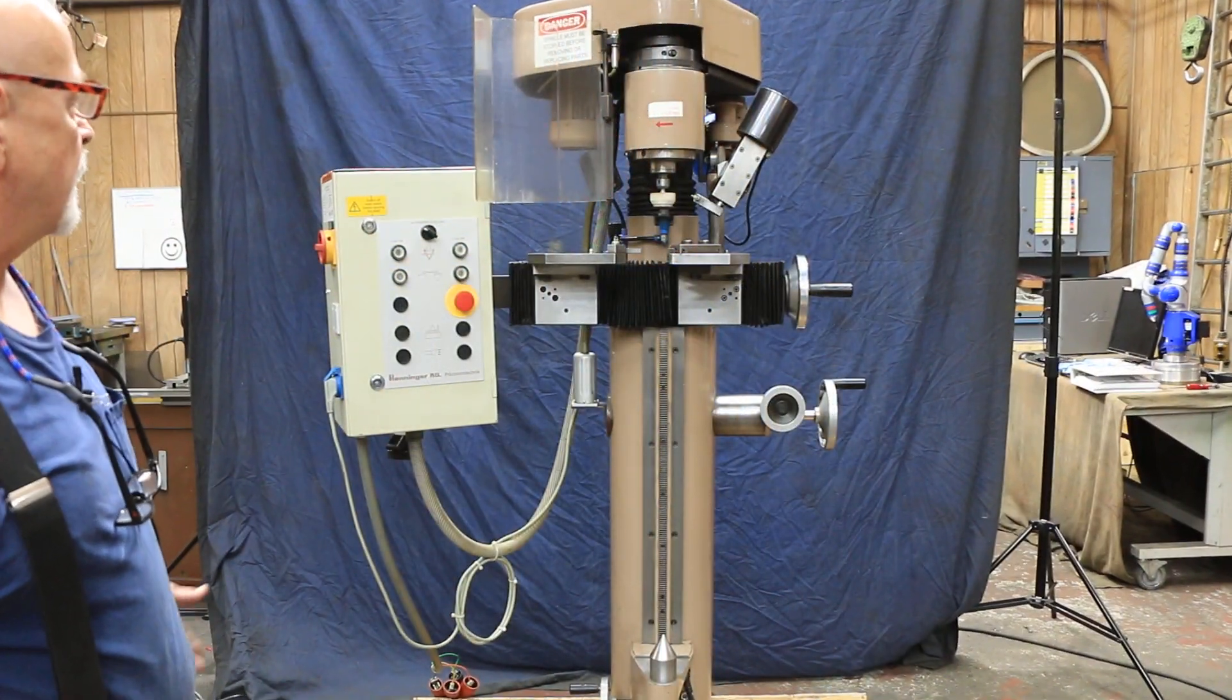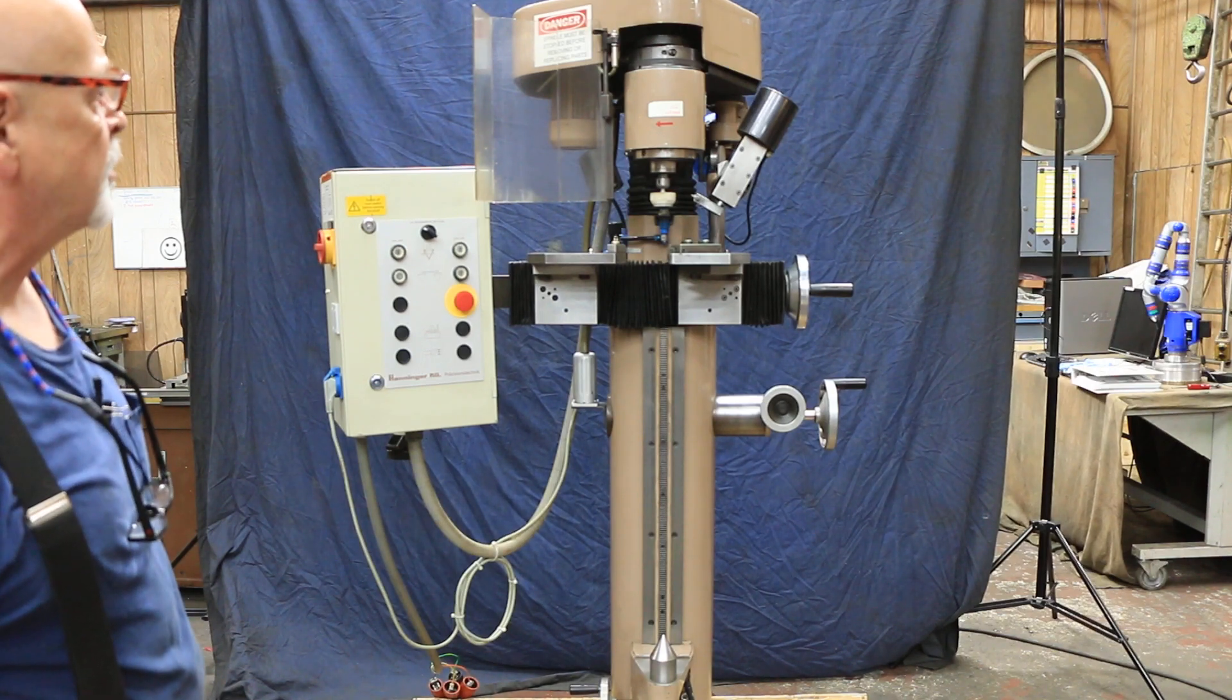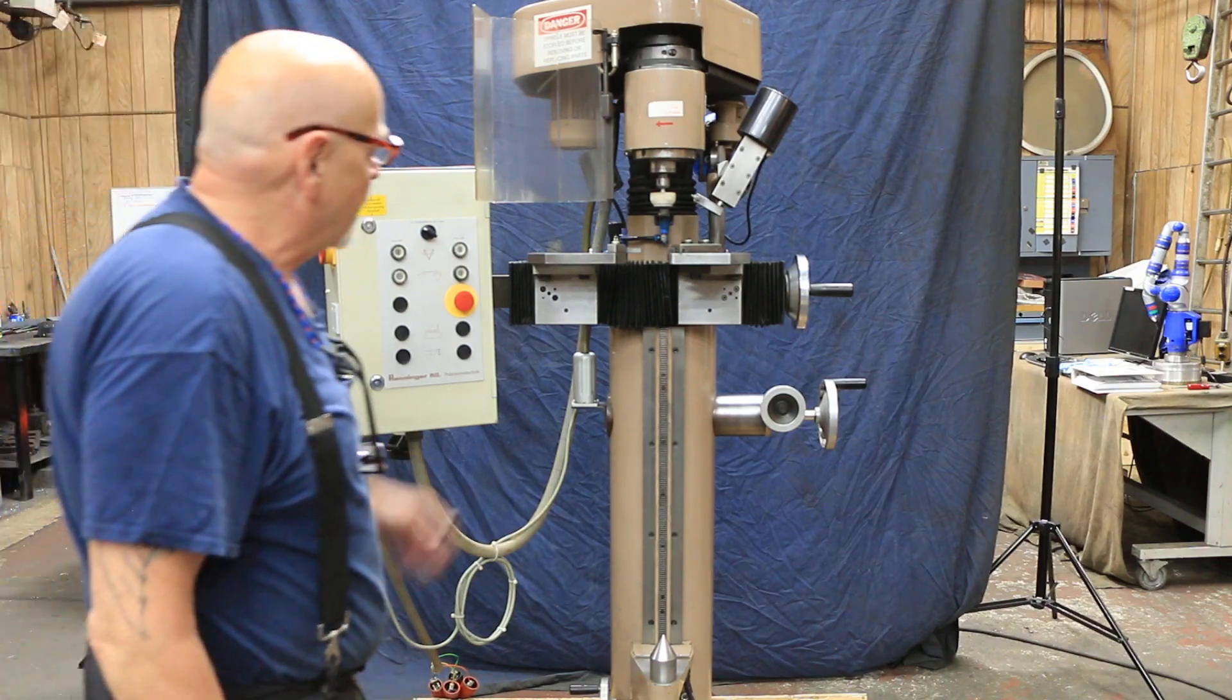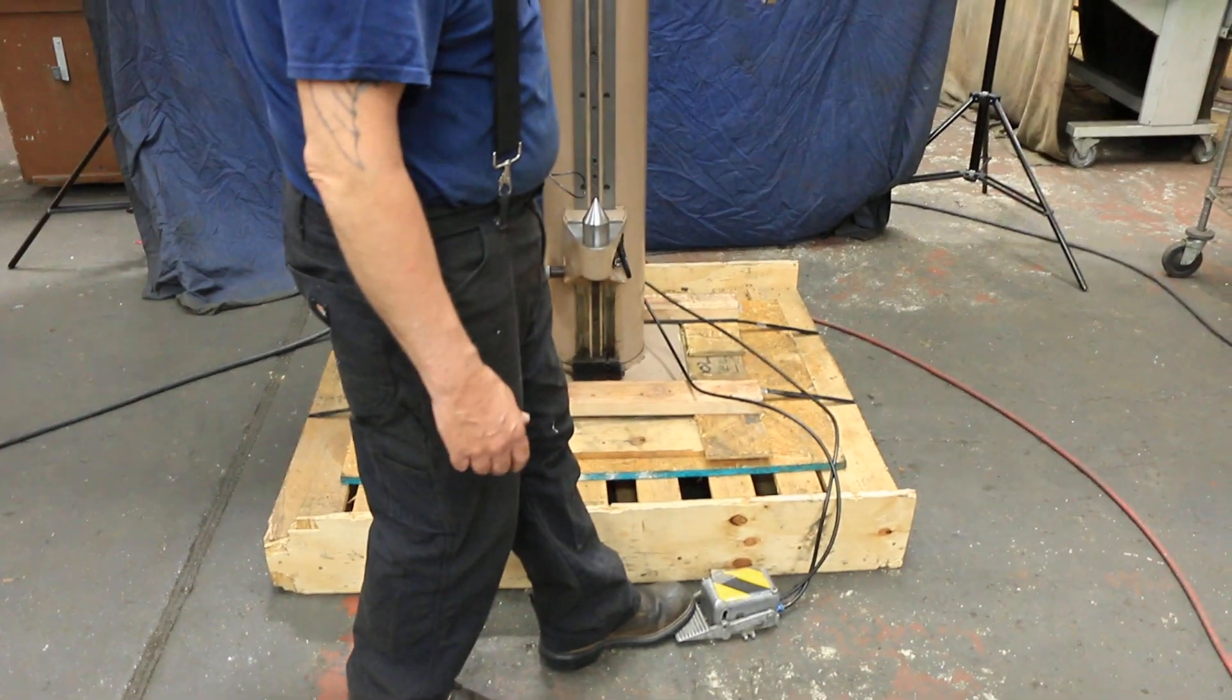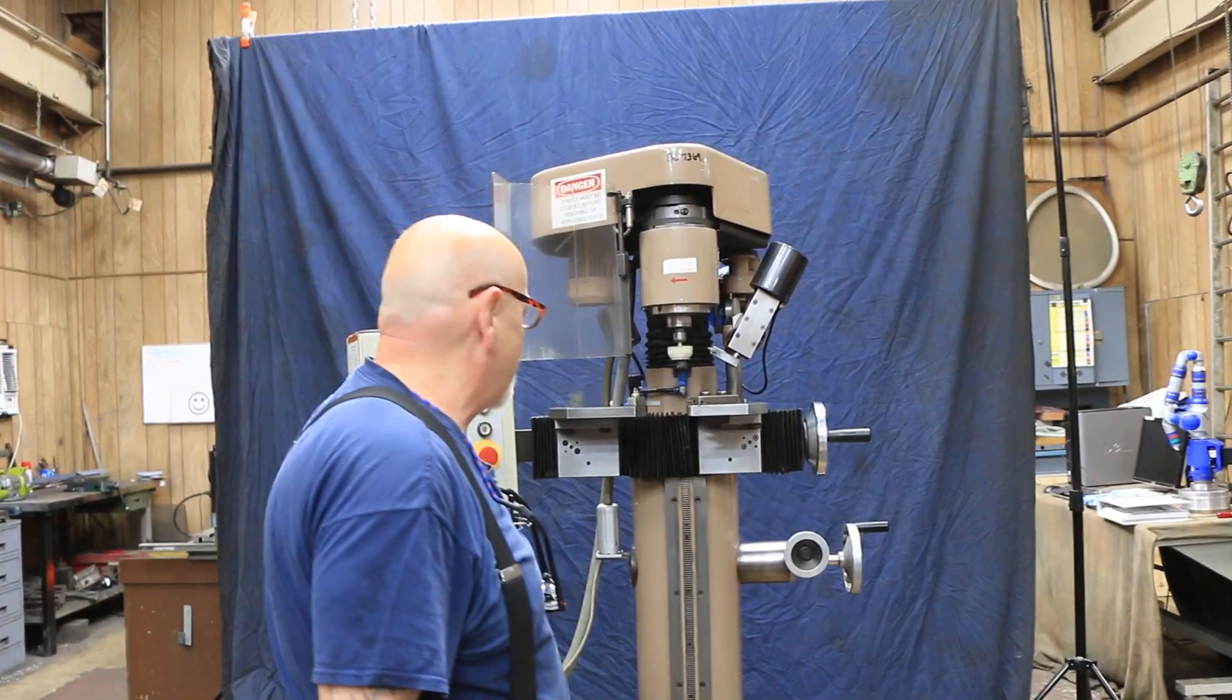So it's currently wired for 480 volts, 460 volts. It has a foot switch here that pneumatically allows you to lower and raise this head so that you can change this tool and then bring it back down into the grinding position.